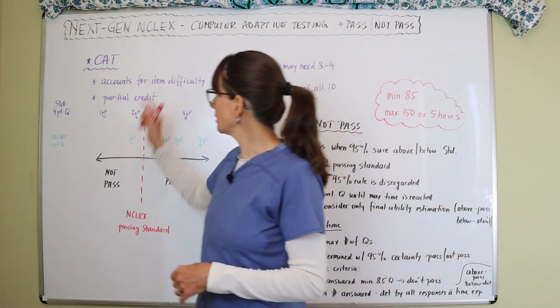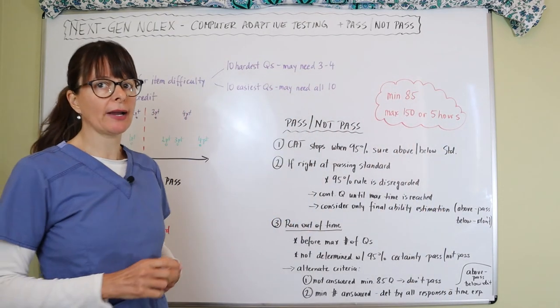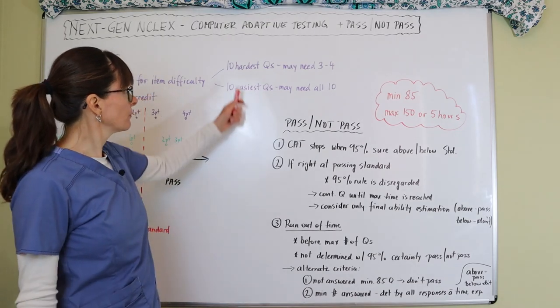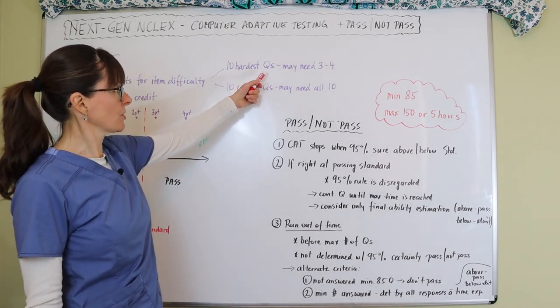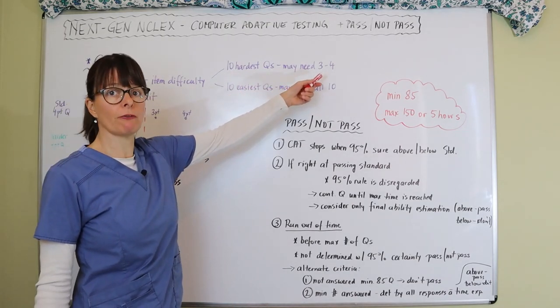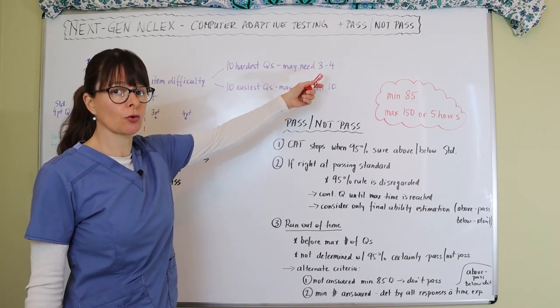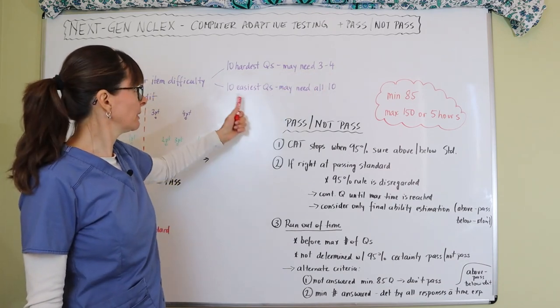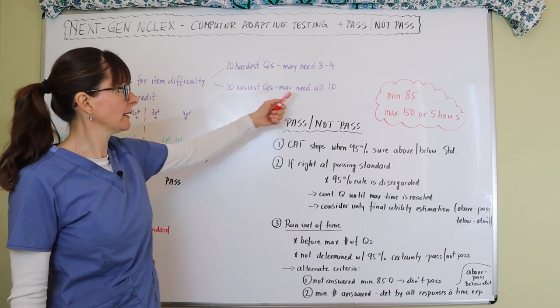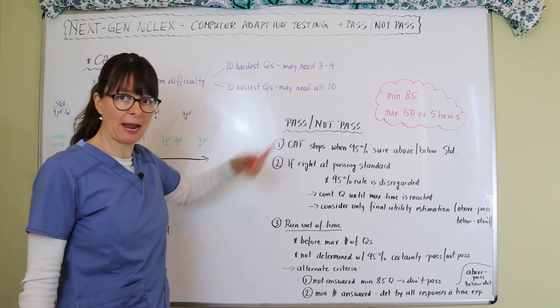When we talk about item difficulty, if you answer 10 of the hardest questions, you might need three or four correct to pass. But for 10 of the easiest questions, you might need all 10 correct in order to pass.